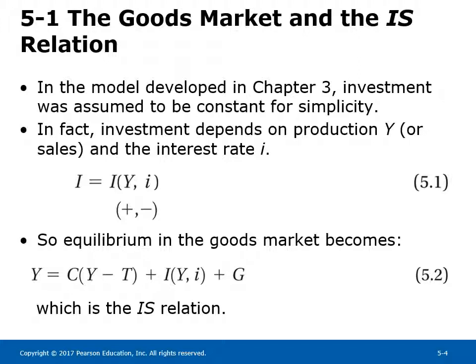Equilibrium in the goods market becomes Y equals C plus I plus G, where C is a function of disposable income Y minus T, investment is a function of output Y and interest rate I, and G is determined by government as a matter of fiscal policy. Equation 5.2 gives us the equilibrium condition in the goods market. It is called the IS relation.